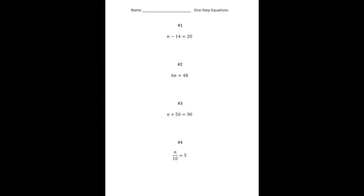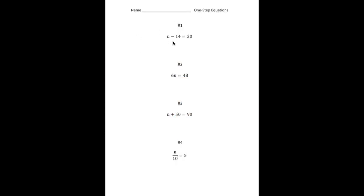Welcome back. Let's see how you did with these practice problems. So number 1, n minus 14 equals 20. So I'm going to, just real quick, put a line through the equal sign. It's like a wall. Remember, what you do to one side of the wall, you got to do to the other side of the wall.